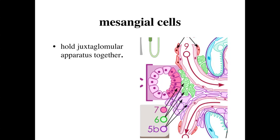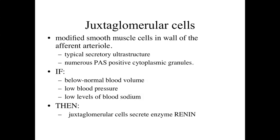The mesangial cells are specialized cells that hold the juxtaglomerular apparatus together. But the important cells are the juxtaglomerular cells, which are modified smooth muscle cells in the wall of the afferent arteriole. They're modified in such a way that they look more like secretory cells rather than simply smooth muscle cells.